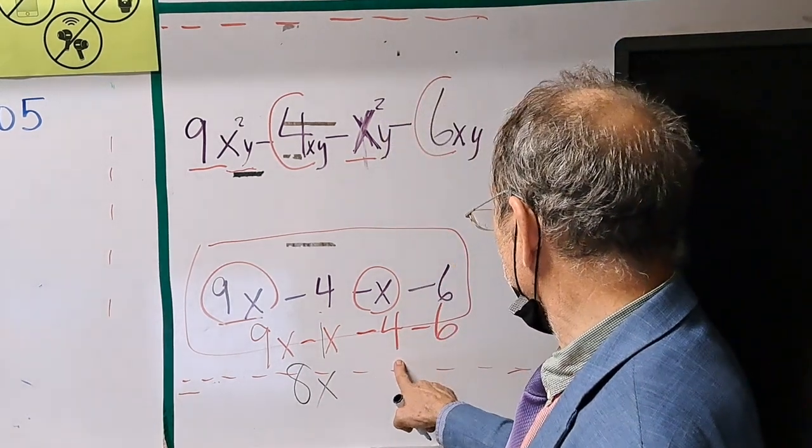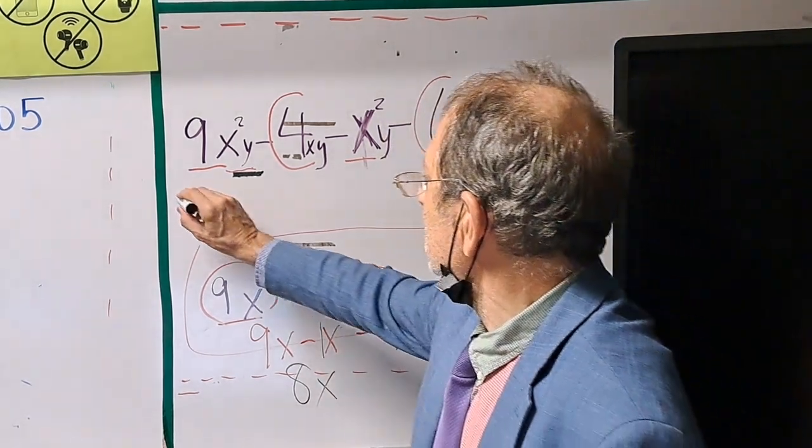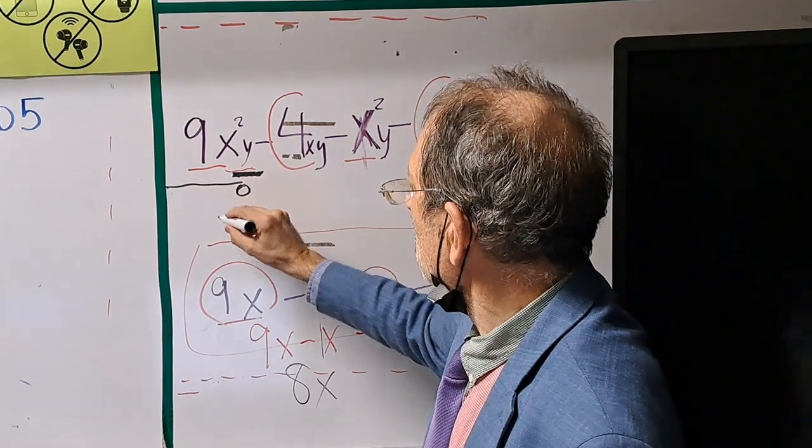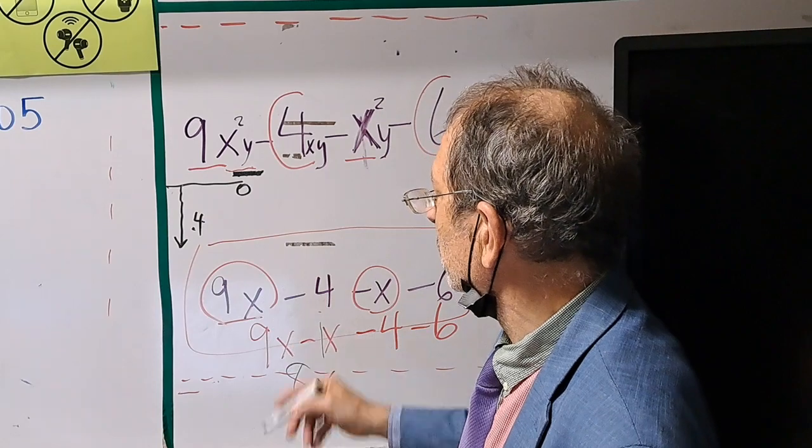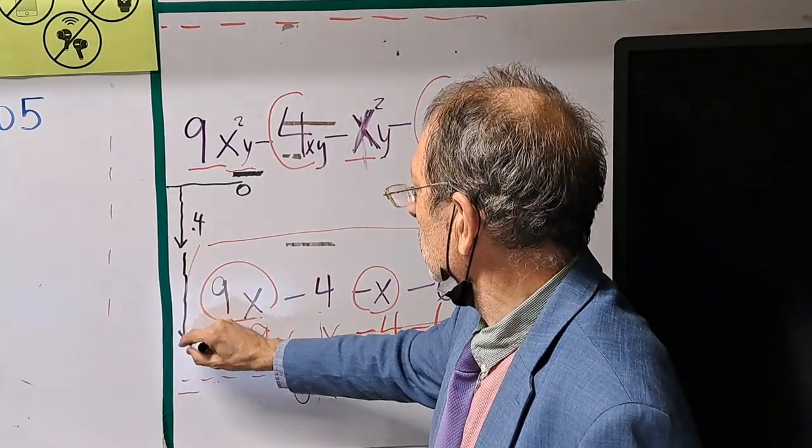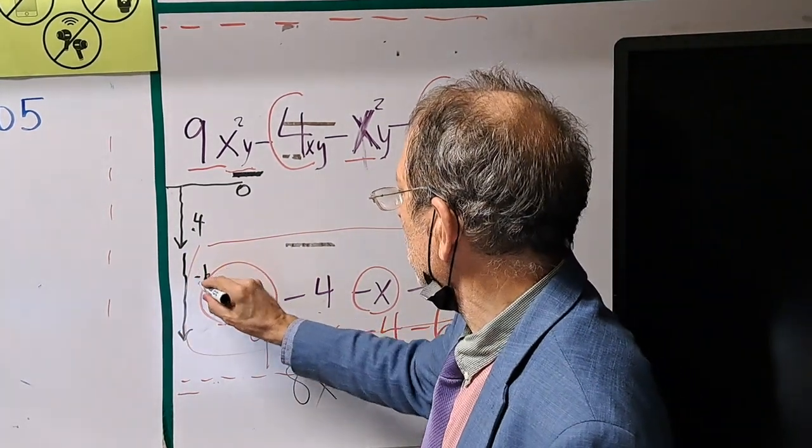This is minus 4 minus 6. So here's 0, and I dig down 4 minus 4. Then I dig down another 6. Where are we?